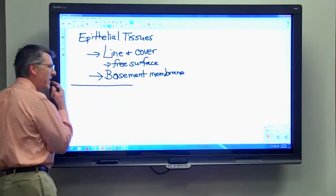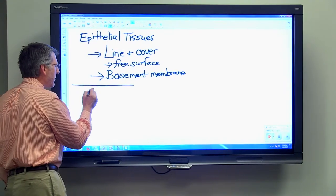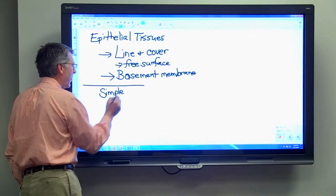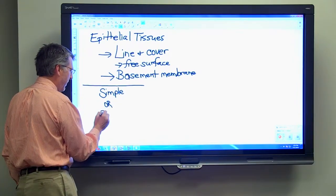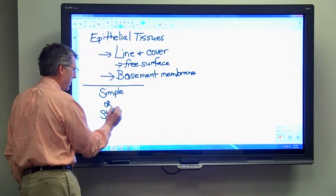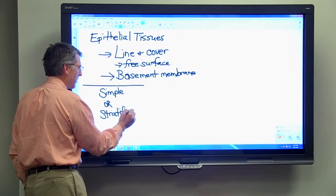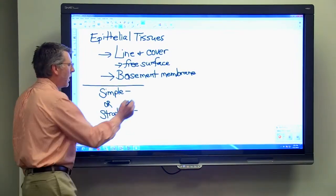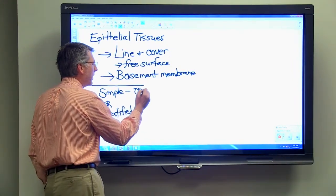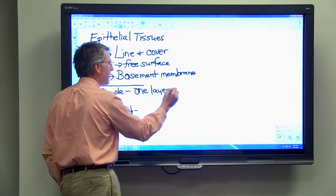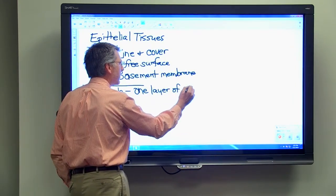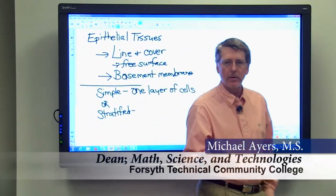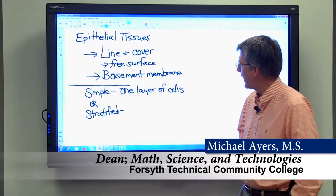Now, epithelial tissues can be either simple or they can be stratified. Simple epithelial tissues have only one layer of cells. So in a few minutes, we'll talk about simple squamous epithelium, for example, and simple squamous epithelium has one layer of cells.